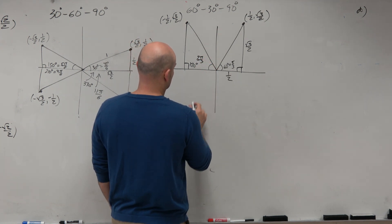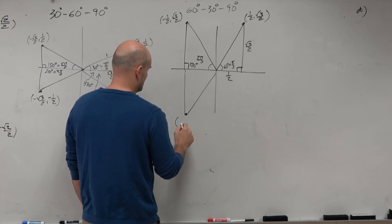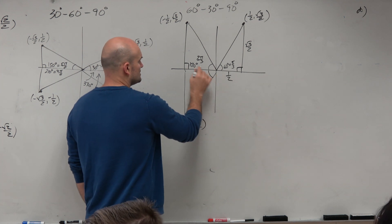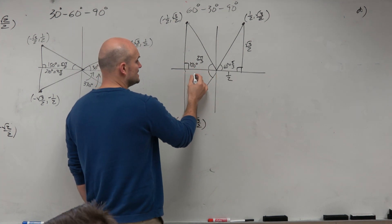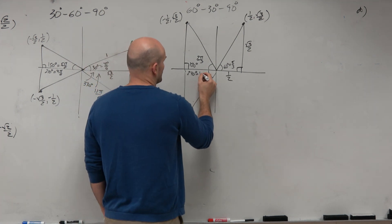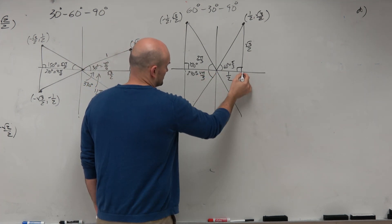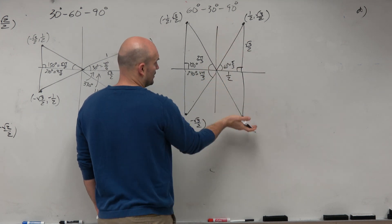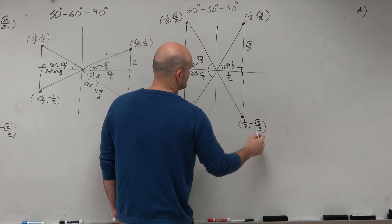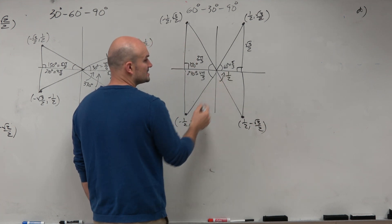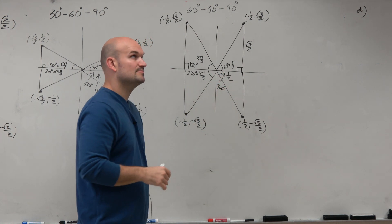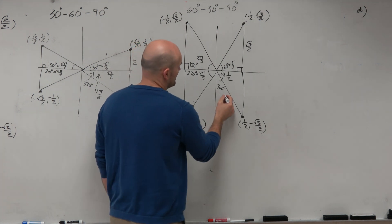Then in the third quadrant: same point, different signs. 60 degrees over — 180 plus 60 is 240 degrees, and pi over 3 over 3 pi over 3 is 4 pi over 3. For the fourth quadrant reflection: 1 half, comma, negative square root of 3 over 2. 360 minus 60 is 300 degrees, and 6 pi over 3 minus 1 is 5 pi over 3.